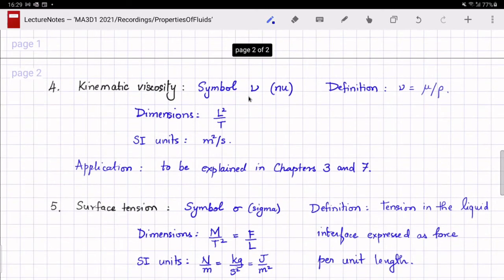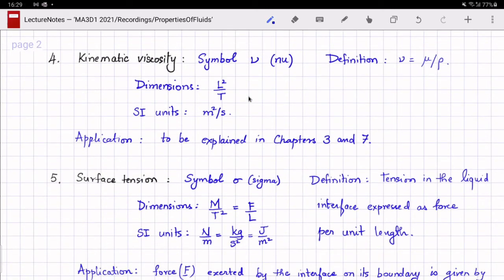The fourth property of fluids we will consider is the kinematic viscosity, denoted by the Greek letter nu and defined as the ratio of mu to rho, the ratio of dynamic viscosity to the density. It has dimensions of length squared over time and SI units of meter squared per second. It's called kinematic viscosity because the dimensions of this quantity do not contain mass.